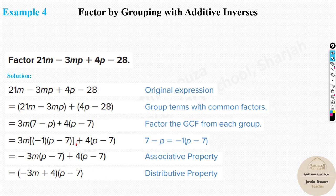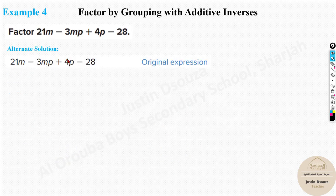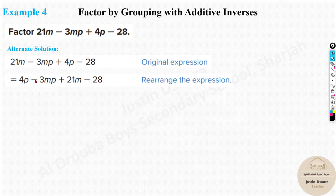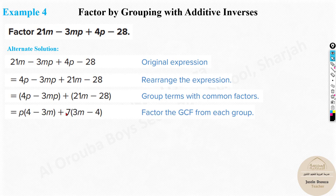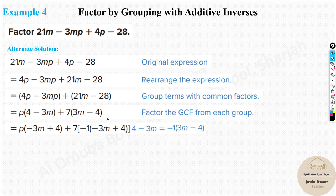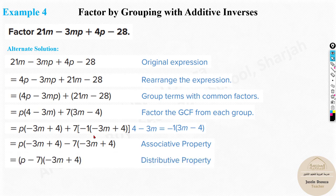You can also solve this by rearranging and grouping differently — say (4p - 3mp) and (21m - 28). Either way, after factoring and matching signs (taking -1 out where needed), both methods give the same answer: (p - 7)(-3m + 4).